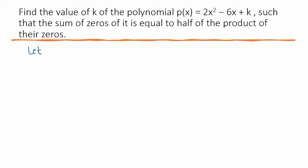Let zeros be alpha and beta. Alpha plus beta is given as, you know, sum of zeros is equal to half of the product. So, half of the product of zeros.